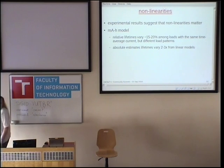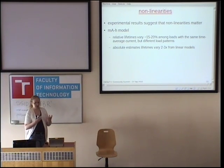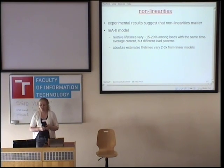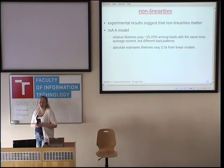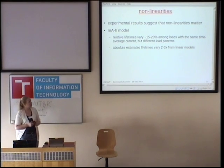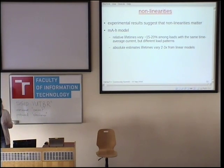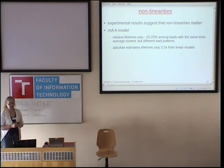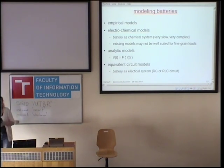So the question is, how much do these nonlinearities matter? We've done some work using a very basic model. When you look at the time-average current using a very simple model, you expect loads with similar average current to have the same discharge time. We actually find variations of about 15 to 20% when you take some of these nonlinearities into account. It's even more important when you're trying to do absolute estimations of lifetime — the linear models just aren't very good. You can really be off by a factor of two or three just using the linear assumptions.